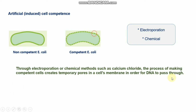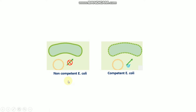Different chemicals are used for making competent cells, but the most commonly used is calcium chloride. This process creates temporary pores in the cell membrane in order for DNA to pass through. As shown here, extracellular DNA cannot pass through a non-competent E. coli cell membrane because it is not permeable, but in competent E. coli the pores allow higher permeability and the extracellular DNA can easily pass through.